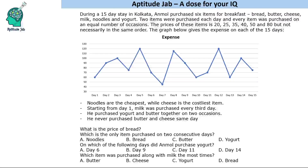Hello everyone, welcome to Aptitude Jab. This is a set based on a line graph. During a 15-day stay in Kolkata, Anmul purchased six items for breakfast: bread, butter, cheese, milk, noodles, and yogurt. Two items were purchased each day and every item was purchased an equal number of occasions. So 15 days times 2 equals 30 items, and with 6 items, every item was purchased 5 times.